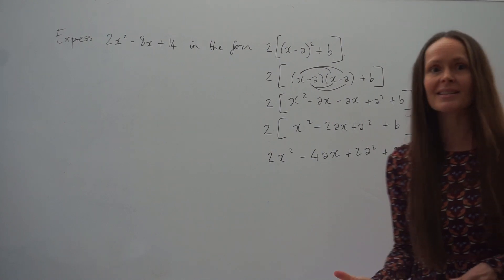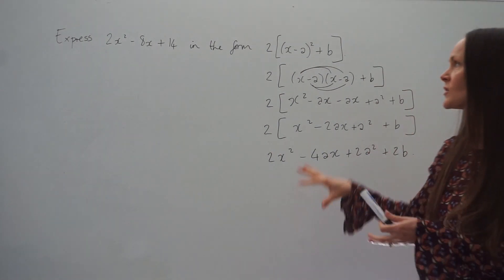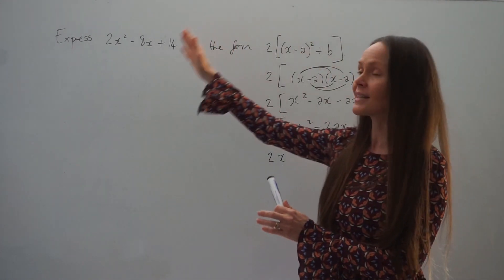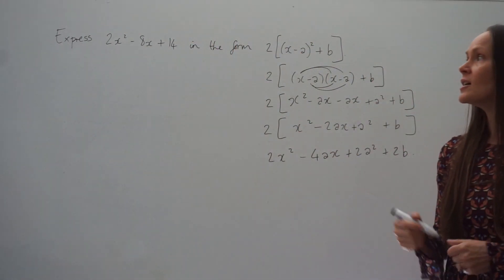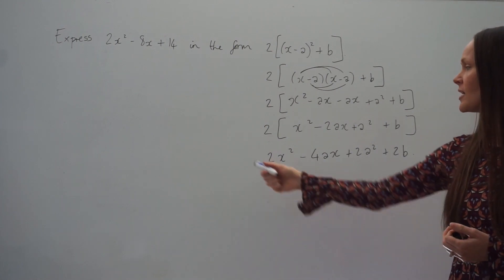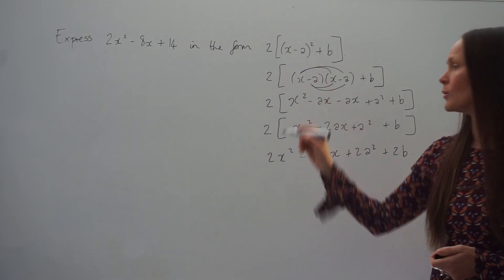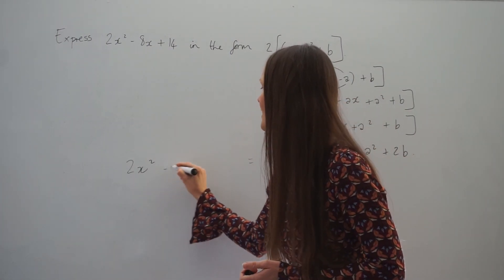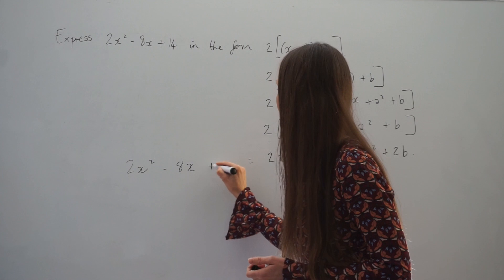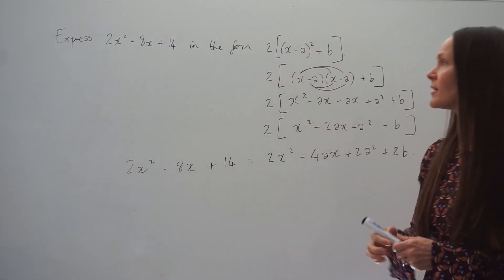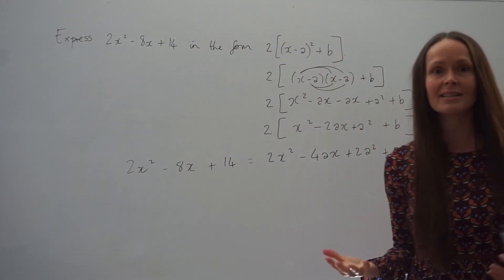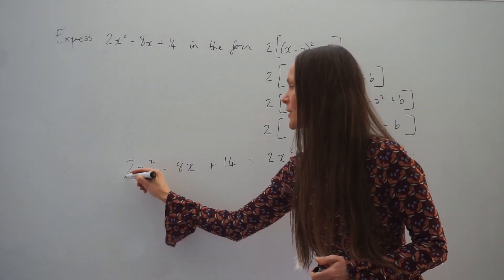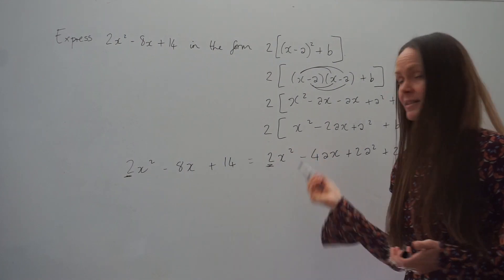Now, remember, the next step is to compare the coefficients of what we've just expanded and simplified with the quadratic given at the start of the question. So I'm going to form an equation and put this equal to 2x squared minus 8x plus 14, because remember, it's exactly the same thing — we're just writing it in a different form. As expected, the 2 in front of x squared is the same. The coefficients have to equal each other.